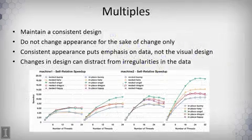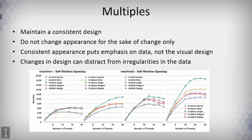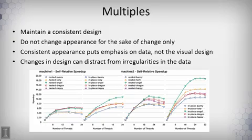Tufte also speaks of multiples — maintaining a consistent design and having multiple visualizations using that same consistent design so that you can see the differences as the data changes. In an example from one of my own papers, we have several different graphs where I've tried to maintain the same vertical axis, the same annotations for different cases, and as much as possible the same horizontal axis, though it changes a little. This way you can see the difference from graph to graph in addition to the individual changes in the data variables inside each graph.